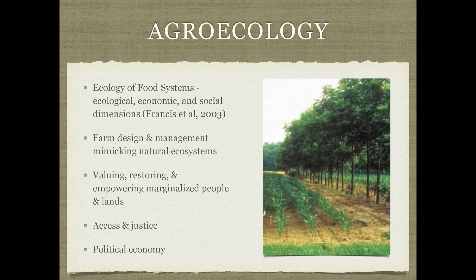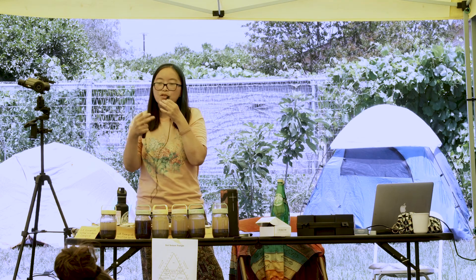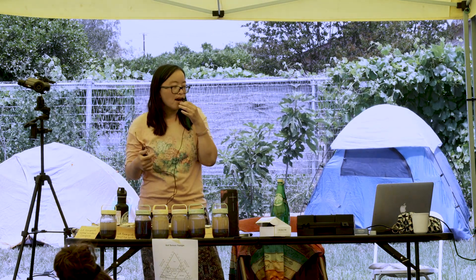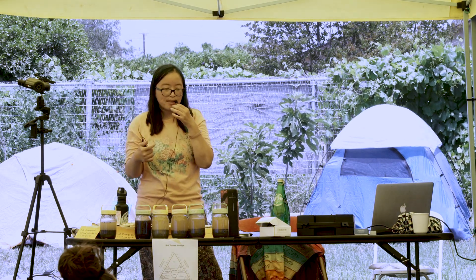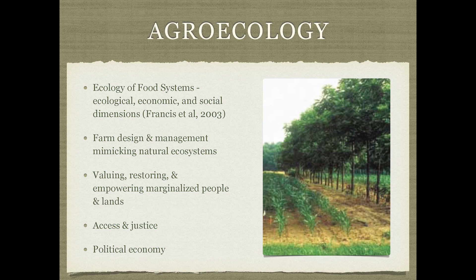The community gardening and urbanized food production movement is well-intentioned and does produce food for the community, but it's also been seen as an organizing tool for community empowerment and building political power. We are valuing, restoring, and empowering marginalized people and lands, integrating marginalized communities and providing access to land so they can practice food production methods from their traditional cultures. It's about access, justice, political economy, and making food accessible to all people.